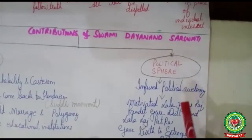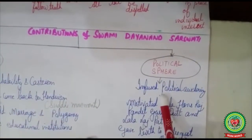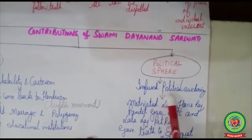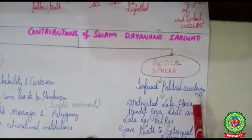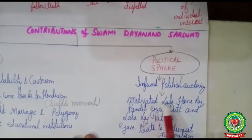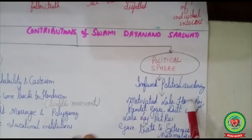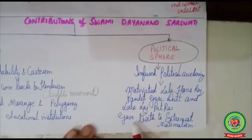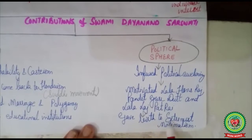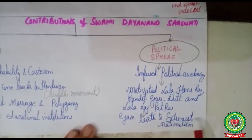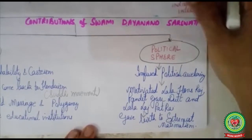In the political sphere, Swami Dayananda Saraswati infused political awakening among the people. He motivated freedom fighters like Lala Hansraj, Pandit Gurudatta, and Lala Lajpat Rai. Through Arya Samaj, he gave birth to extremist nationalism — a group of freedom fighters who believed in taking up arms against British rule.